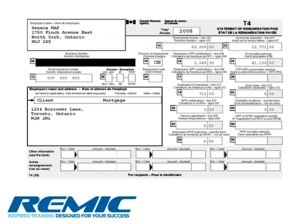Next up is a T4. A T4 is a document provided to an individual by his or her employer to summarize income for a given one-year period. This document is typically obtained by a broker or agent when the applicant has employment income, such as salaried or hourly income. Please refer to the manual for a detailed breakdown of the T4.